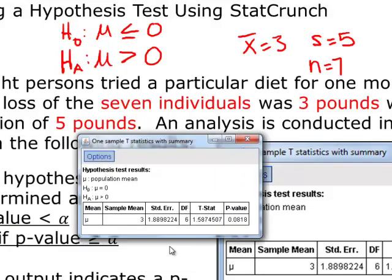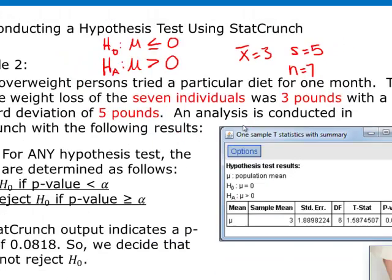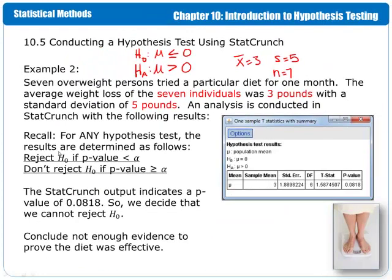If we select Calculate, it gives us the results. Recall that for any hypothesis test, we reject the null hypothesis if the p-value is less than alpha, or don't reject the null hypothesis if the p-value is equal to or greater than alpha. Here we have our p-value of 0.08. You can see that value is higher than alpha, which is 0.05. The StatCrunch output indicates a p-value of 0.08, so we decide that we cannot reject the null hypothesis because 0.08 is larger than 0.05. We conclude there is not enough evidence to prove the diet was effective.